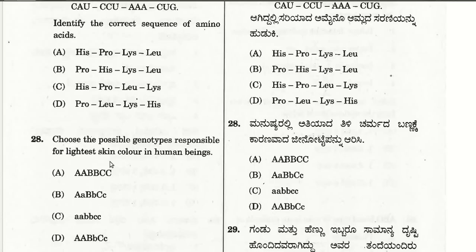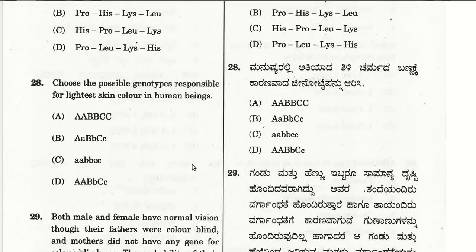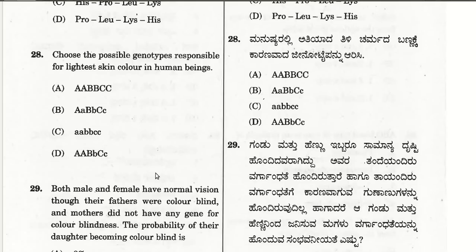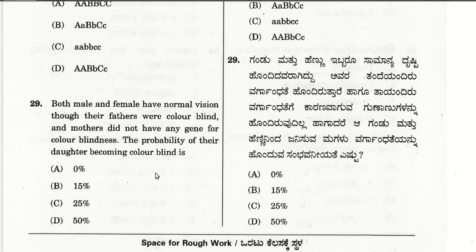The twenty-eighth question: choose the possible genotypes responsible for lightest skin color in human beings. The more dominant genes, the darker the color. If melanin pigment is less synthesized — when genes are in recessive condition — C is the right choice, where all genes are in homozygous recessive condition: AABBCC.